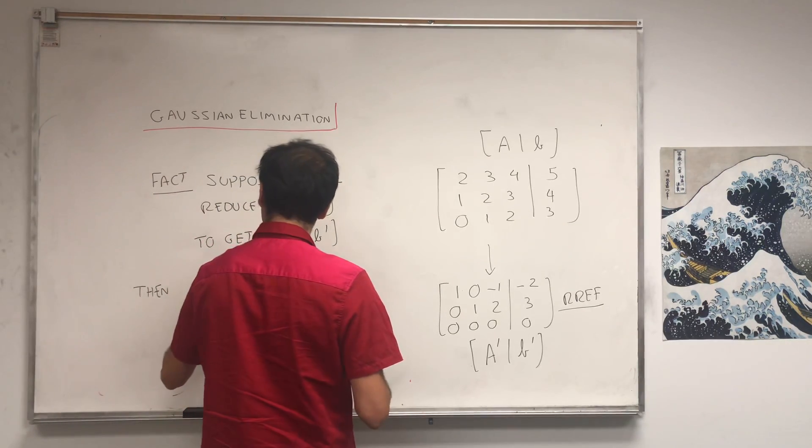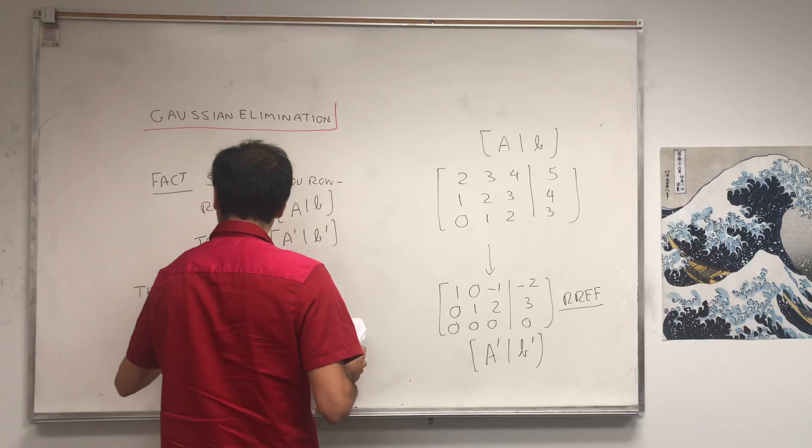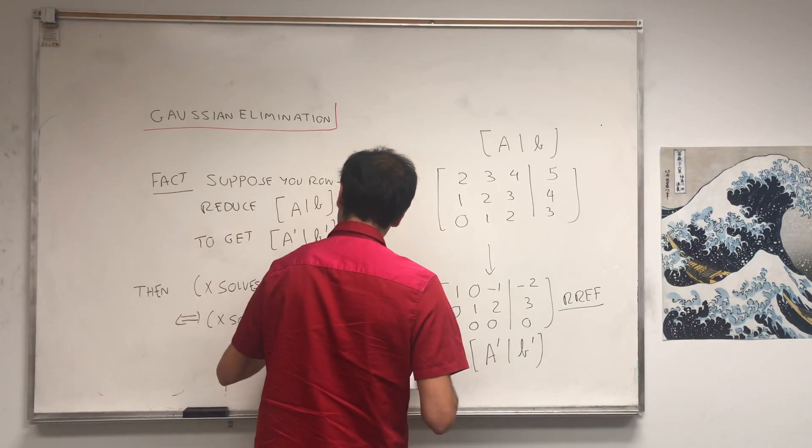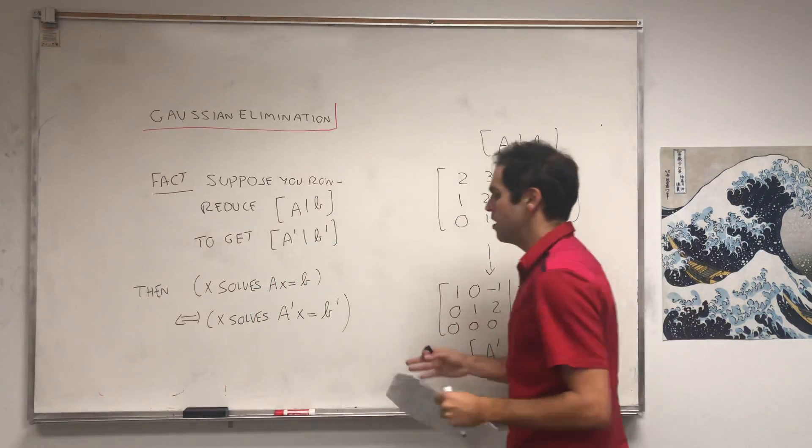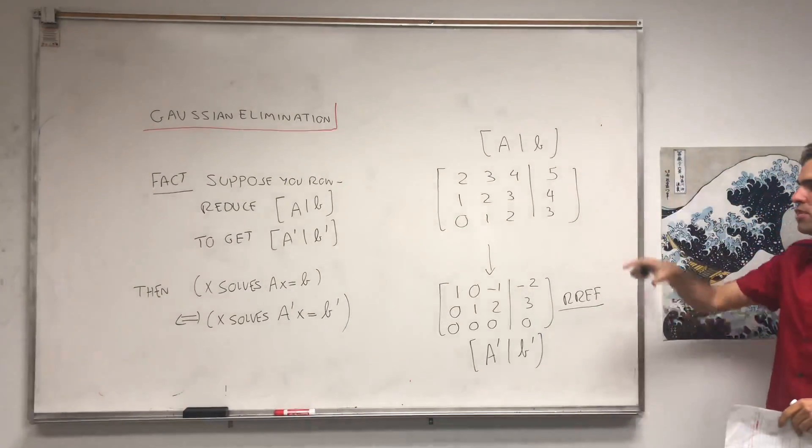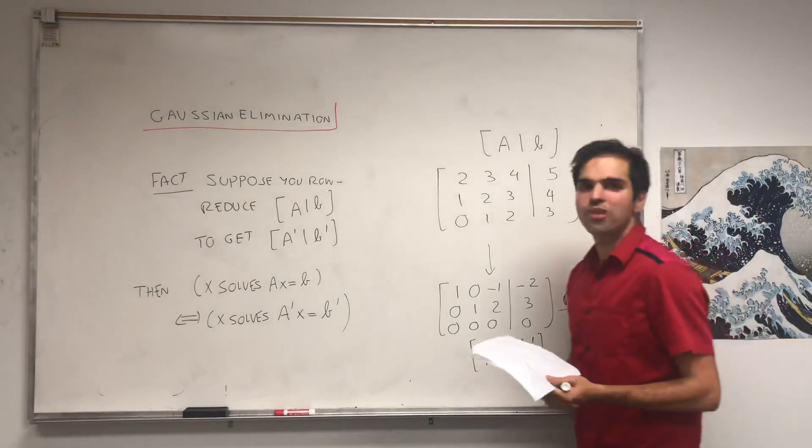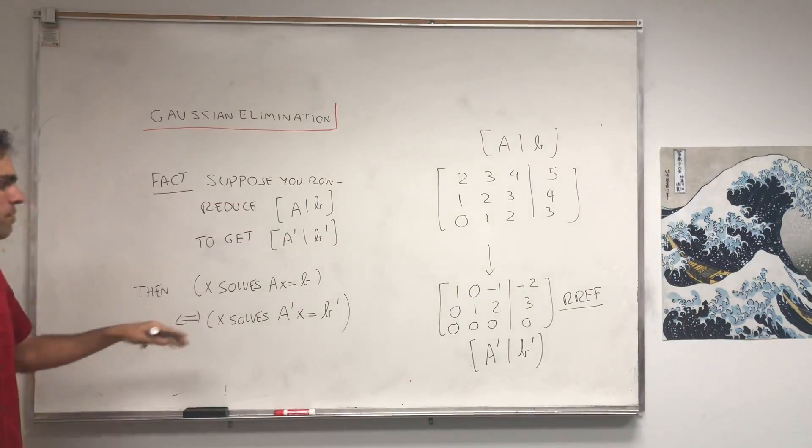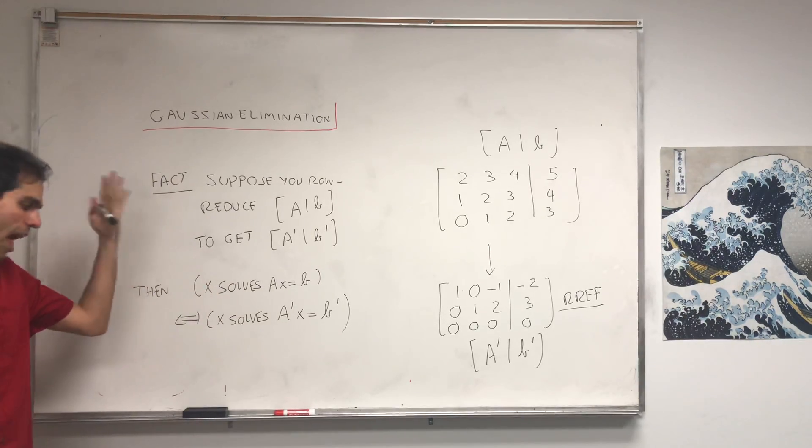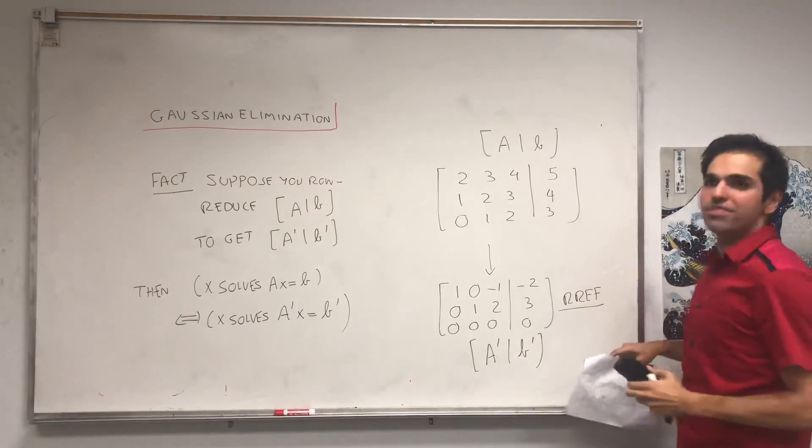And important, this new matrix doesn't have to be in reduced row echelon form. Could be any favorite echelon form you want, as long as you row reduce, then basically x solves Ax equals B if and only if x solves A prime x equals B prime. In other words, the solutions of our original system Ax equals B is precisely equal to the solution of our new system A prime x equals B prime, which says that we're not losing any solutions by row reducing. We're also not adding some non-solutions when we row reduce. So we really get the same solution set.